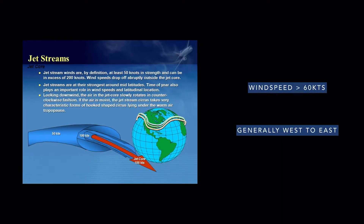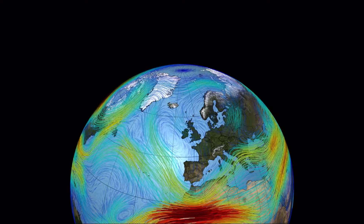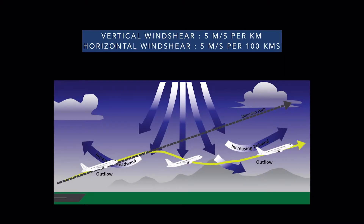Jet streams are narrow bands of strong winds with speed more than 60 knots. These generally blow from the west to east across the globe. A jet stream is seen as a long corridor of high speed wind which is around 1500 nautical miles in length, 200 nautical miles in width, and 12,000 feet in depth. The path of a jet stream is zigzag and it has strong vertical and horizontal wind shears.